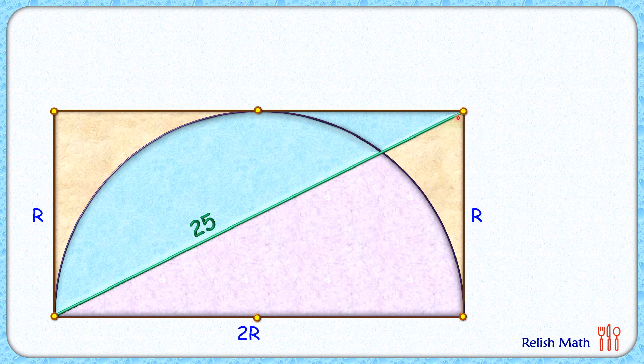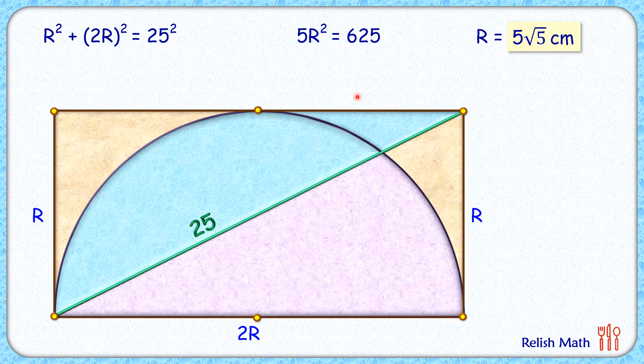Now if we check this green triangle, it's a right angle triangle. Applying Pythagorean theorem, we get r² + (2r)² = 25². Simplifying, we get r² + 4r² = 625, or 5r² = 625, and r² = 125. Thus r is 5√5 centimeters.